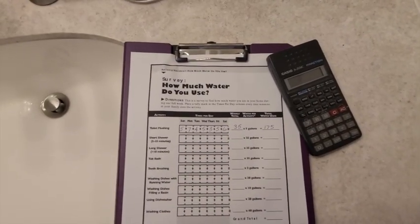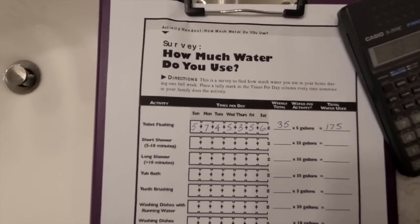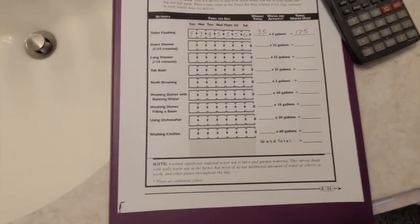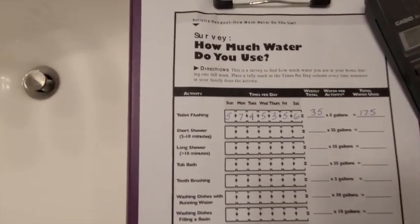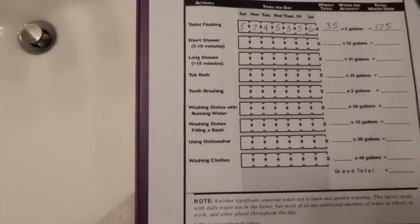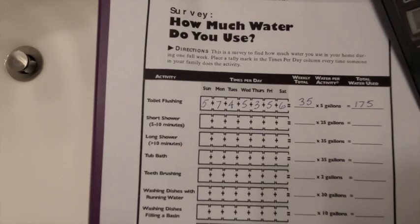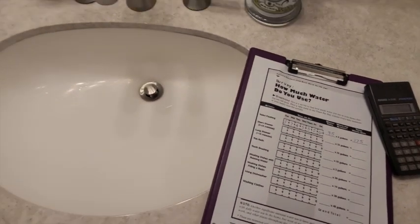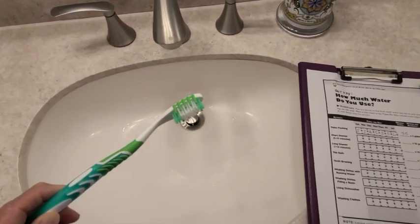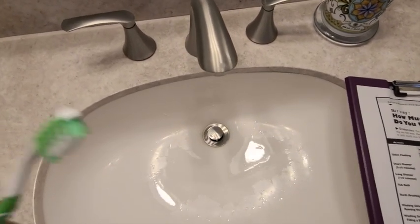I'm still here in the bathroom working on our water audit, and this is our water audit sheet. You can copy this, print it up, or make your own list in your garden journal. Just make a list of the different things that you do, and the sheet has all the different quantities of water that you would be using. So let's take a look at one more thing in the bathroom that uses a lot of water — and yes, that would be brushing your teeth. According to the water audit, it takes two gallons on average to brush your teeth.